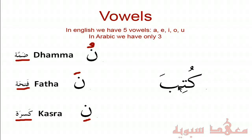And then we have the Ba with a Fathah on top. Remember, the Fathah has an A sound, so that would be Ba. So the full word is Ku-Ti-Ba, which means 'It was written' or 'It was prescribed.'